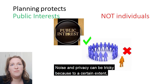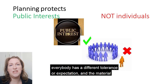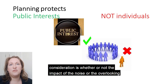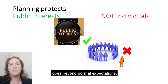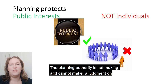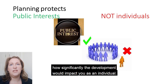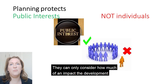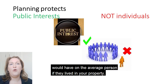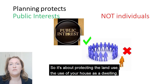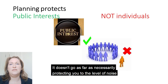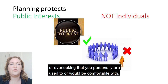Noise and privacy can be tricky because to a certain extent everybody has a different tolerance or expectation, and the material consideration is whether or not the impact of the noise or the overlooking goes beyond normal expectations. The planning authority is not making and cannot make a judgment on how significantly the development would impact you as an individual. They can only consider how much of an impact the development would have on the average person if they lived in your property. So it's about protecting the land use, the use of your house as a dwelling. It doesn't go as far as necessarily protecting you to the level of noise or overlooking that you personally are used to or would be comfortable with.